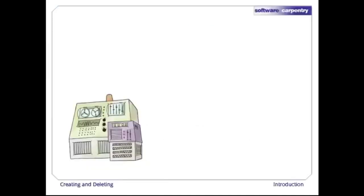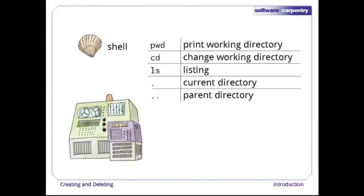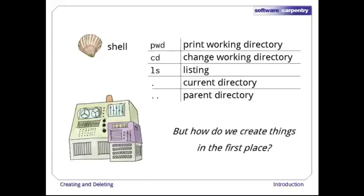As we've seen in previous episodes, one way to interact with a computer is through a command line shell. When we type in commands like these, the shell finds the corresponding programs, runs them on our behalf, and shows us their output. But how do we create files and directories for it to show us?